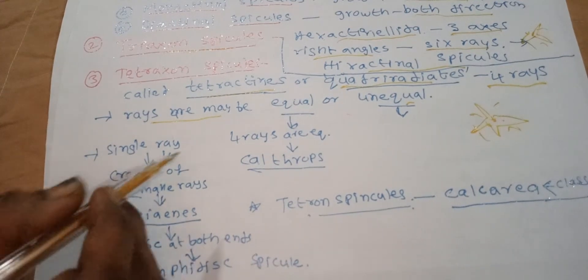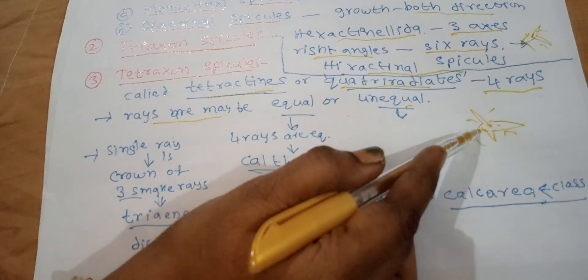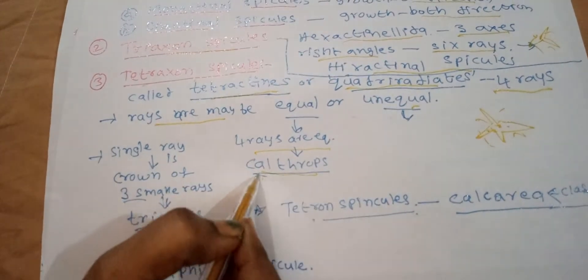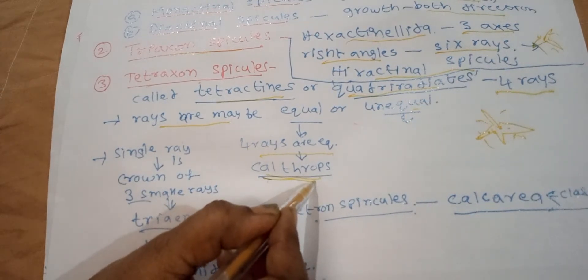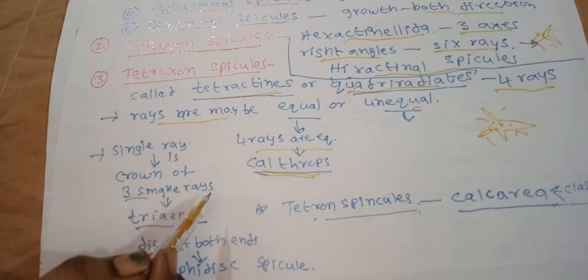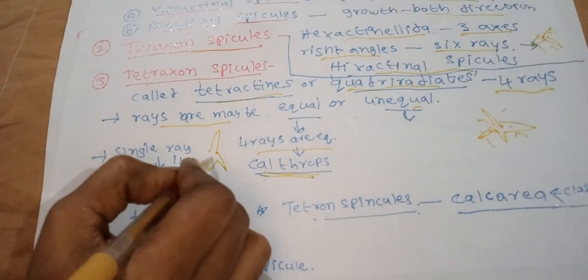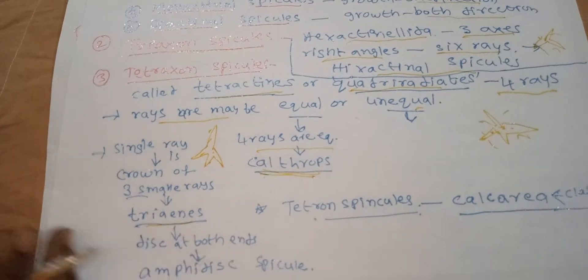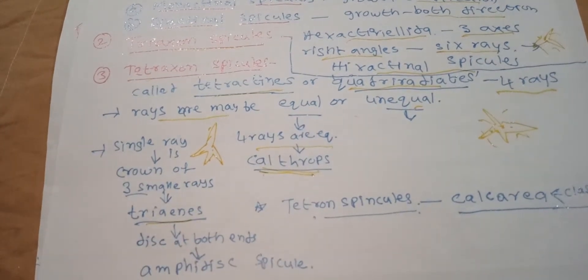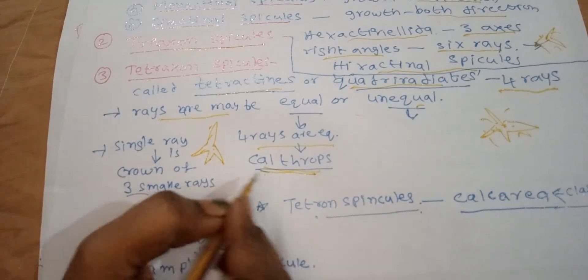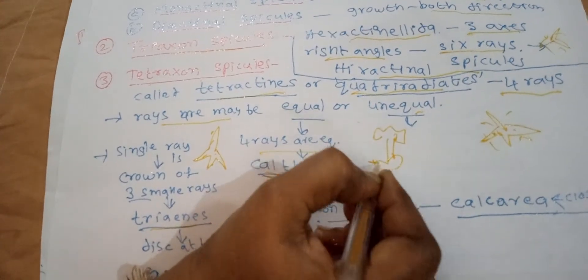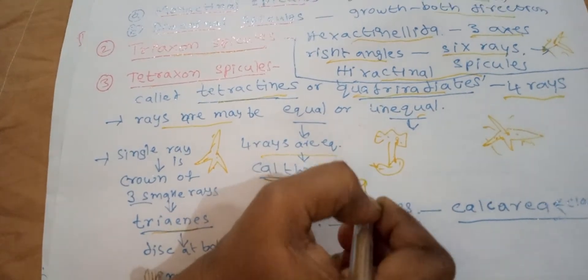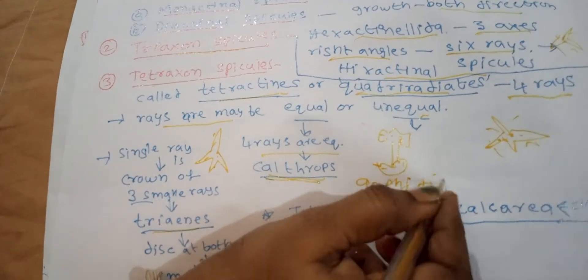When the four rays are equal, the spicule is called a calthrop. When a single ray is elongated bearing a crown of three smaller rays, it is called a triaene. When the elongated ray bears a disc at both ends, it is called an amphidisc spicule.